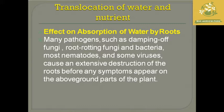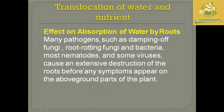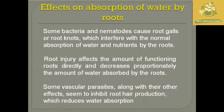Regarding the effects on absorption of water by roots, most pathogens such as damping-off fungi, root-rotting fungi, bacterial nematodes, and some viruses cause extensive destruction of root cells. The destruction of root cells shows symptoms appearing only in above-ground parts. Some bacteria and nematodes cause root galls or root knots, which interfere with normal absorption of water and nutrients by the roots. Vascular parasites also inhibit root hair production and reduce water absorption.